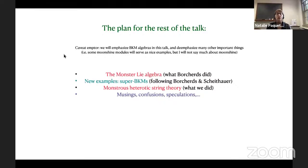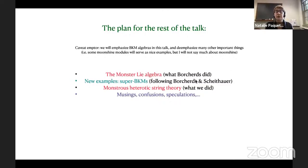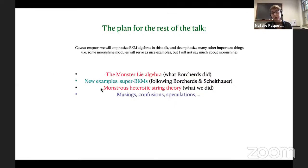What we'll do next is introduce Borcherds–Kac-Moody algebras largely in the context of historically the most important one: the monster Lie algebra. We'll review what that algebra looks like and how it appeared historically. Then I'll explain how my collaborators and I produce new examples of Borcherds–Kac-Moody superalgebras, following groundwork by Scheithauer, who constructed the first supersymmetric example. After discussing BKM algebras and superalgebras, I'll go back to the physics perspective and explain how BKMs can naturally arise in certain low dimensional string compactifications, and conclude with wild speculations.